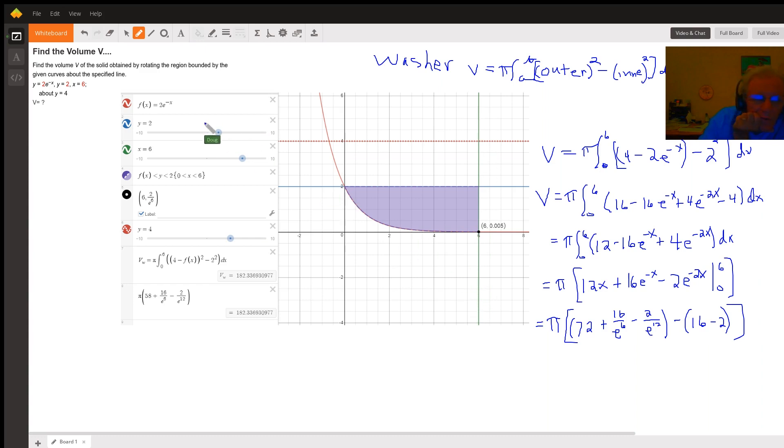And we're rotating this region, the purple region, about the line y equals 4. So this looks like a problem that's conducive to using the washer method. And I've mentioned the formula up here when you're using the washer method.